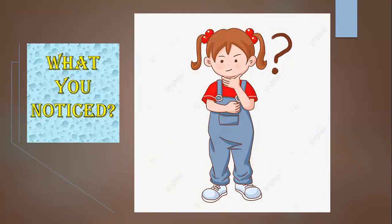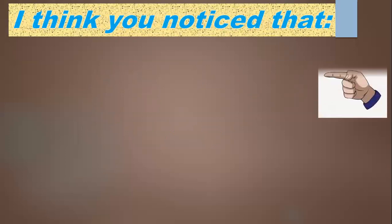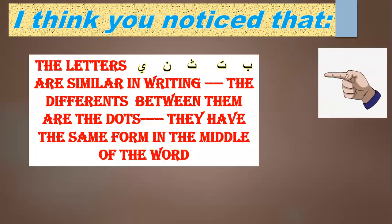What did you notice? I think you noticed that the letters Ba, Ta, Tha, Noon, Ya are similar in writing. The difference between them are the dots. They have the same form in the middle of the word.